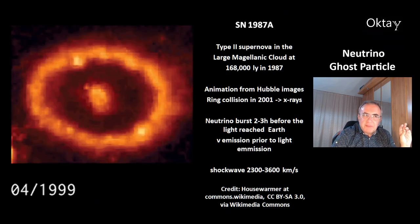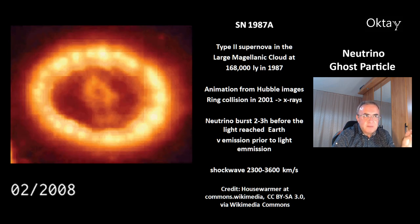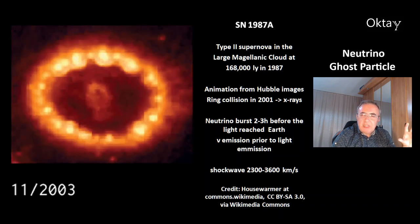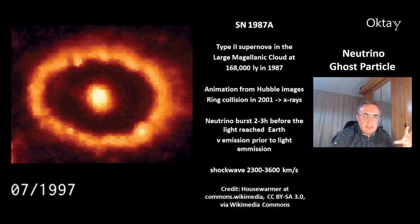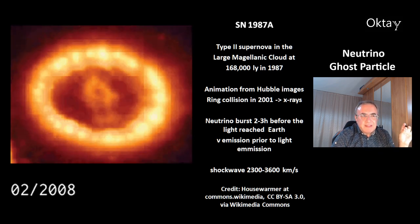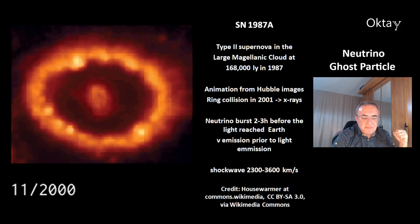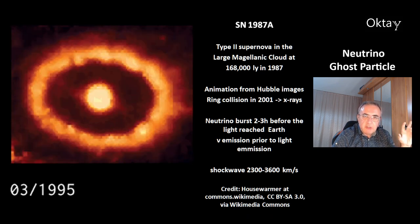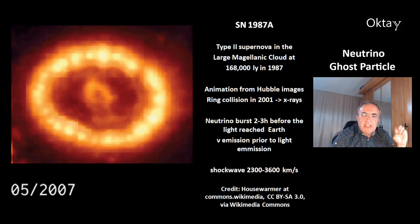This is an event from the year 1987 — a supernova type 2 in the Large Magellanic Cloud, at a distance of 168,000 light years. This animation is made from Hubble images. You can see a ring collision in 2001 that emitted X-rays. There was a burst of neutrinos that arrived at Earth 2 to 3 hours before the light reached Earth. But that does not mean neutrinos traveled faster than light, because the neutrino emission happened prior to the light emission — that's why they arrived first.